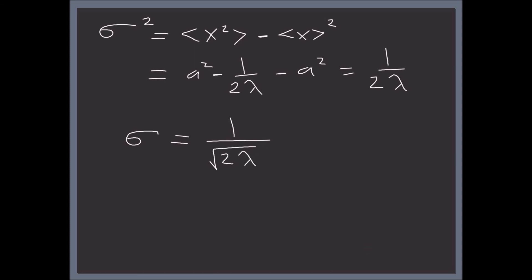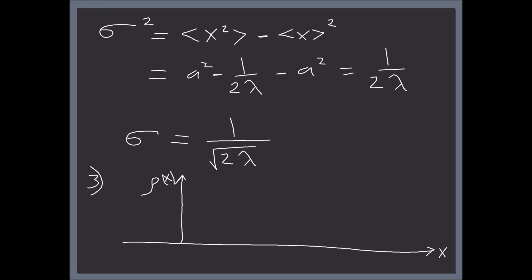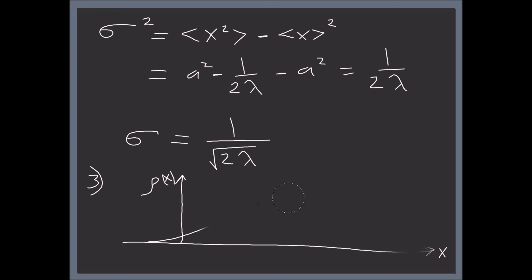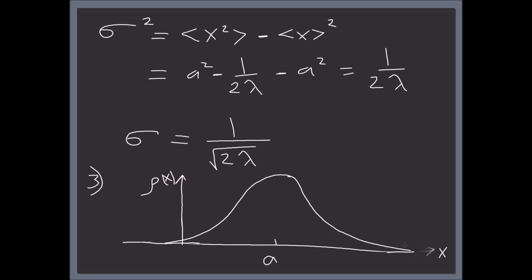For part three, let's sketch this. Here is the x-axis and the probability density rho of x. A Gaussian looks something like this — a bell curve. The peak is at A. As you can see, the expectation value of x is A, which makes sense — it's the midpoint of the distribution.